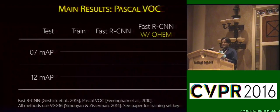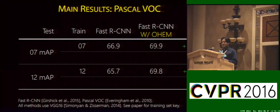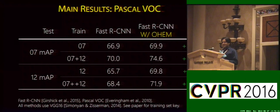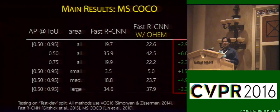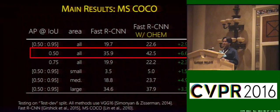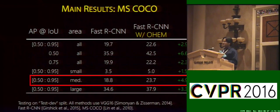Now that we have seen how simple our method is, let's see how much it helps on standard benchmarks. On VOC 2007 and 2012, both when using the standard splits and with extra data, we see a consistent three to four point boost. On MS COCO dataset, we again see consistent boost across all metrics — for example, more than a six point boost on the AP50 metric, and a five point boost for medium-sized objects on the stricter COCO metric.